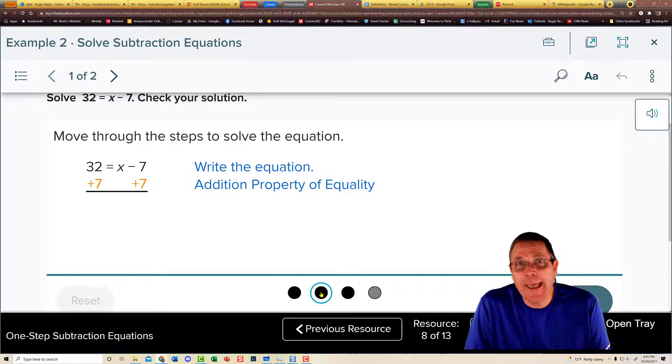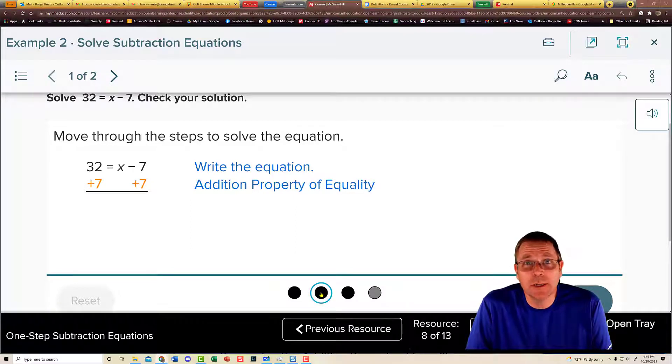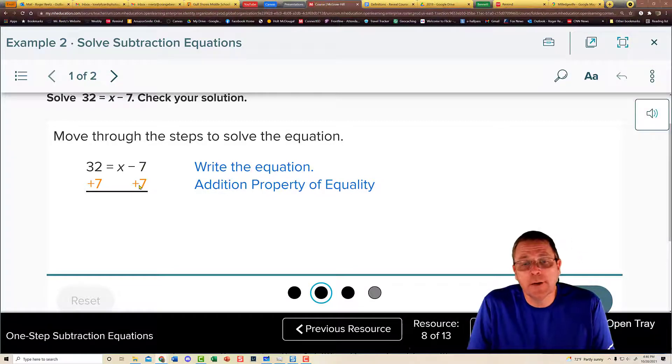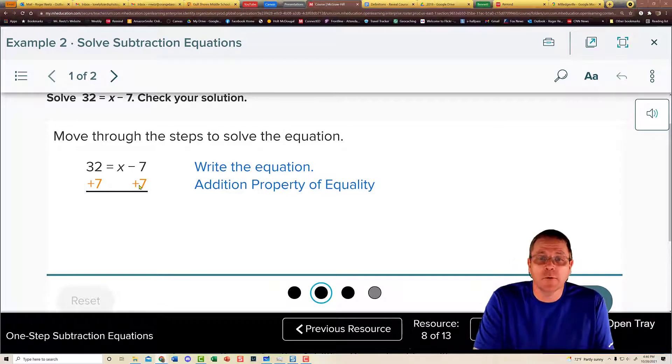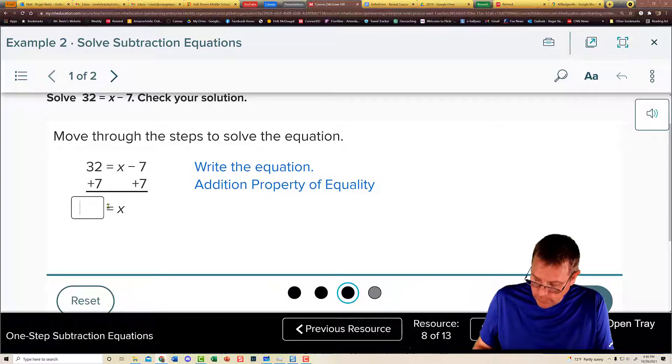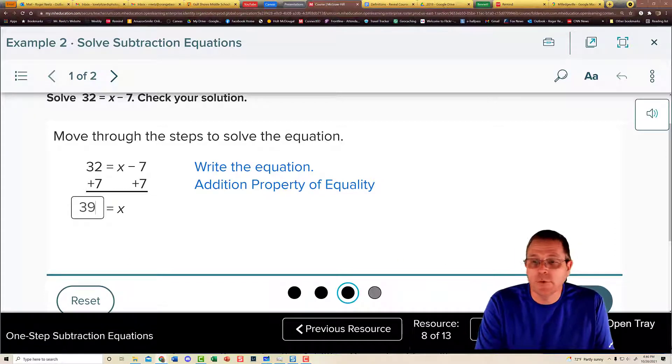Well, that is going to be to add 7 to both sides of the equal sign just like you see here. Now on your paper, I would encourage you to draw a line through those 7s there to indicate that they have been zeroed out. Remember, we don't use the word cancel unless the high school math teacher's head explode all over you. And then from there, on the right-hand side, all you have left is x. And on the left-hand side, 32 plus 7. That's going to equal 39.